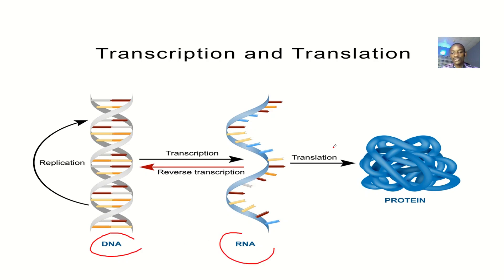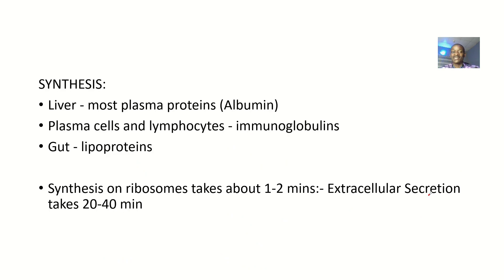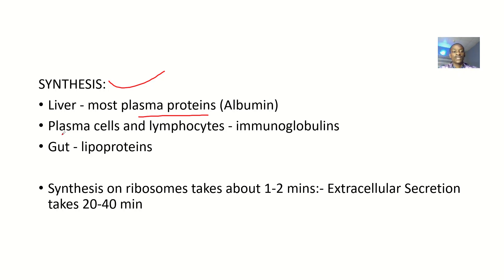We're not here to talk about the process, just the sites. So, protein synthesis can occur in the liver, and that's where most plasma proteins are formed — plasma proteins like albumin.